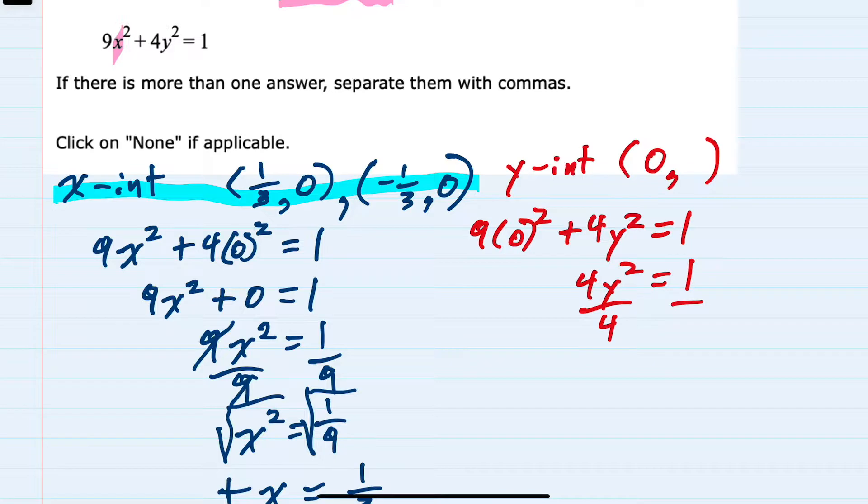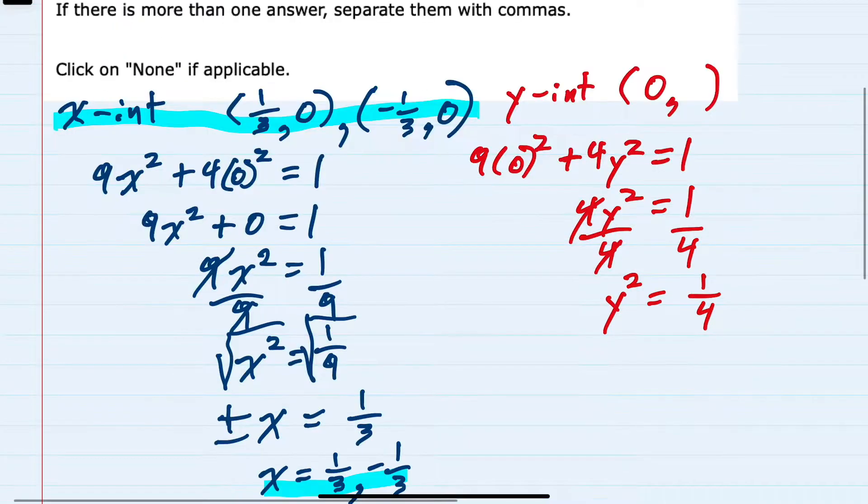Dividing by 4 on both sides to solve for y, y squared equals 1-fourth. To solve for y here, I would take the square root of both sides, remembering that while we cancel the square root and the square, we have a plus or minus y equals the square root of 1-fourth.